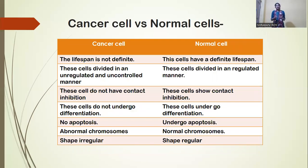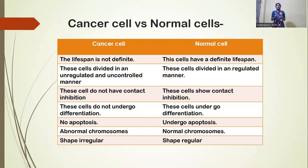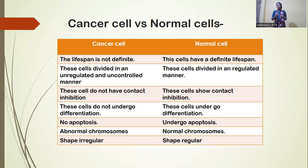Now we differentiate between cancer cells and normal cells. First, the lifespan is not definite in the case of cancer cells — their lifespan is not definite. But in the case of normal cells, they have a definite lifespan. Normal cells go through their division cycle and are destroyed after a certain period, but in the case of cancer cells, this does not occur — they keep growing.